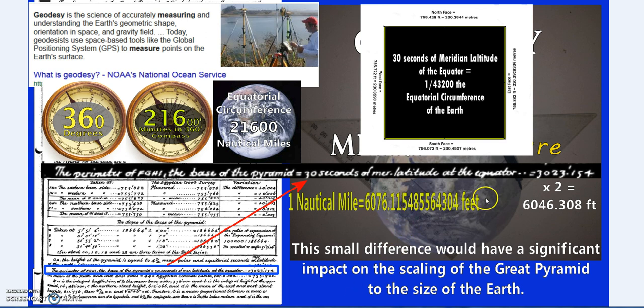The perimeter times 43,200 should give us the equatorial circumference of the earth, but it doesn't quite work out that way. This is only 30 feet different, but 30 feet times 43,200 adds up to quite a bit.